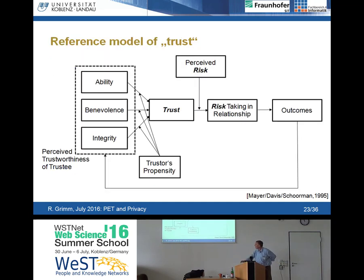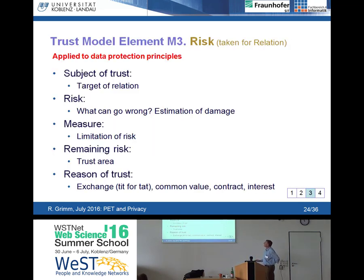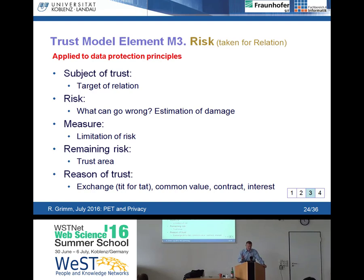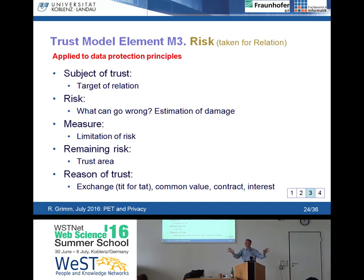M3 would be the risk; M1 the truster; M2 the trustee. This is part of requirements engineering — to analyze the risk. In order to analyze risk you must specify what is the subject of trust, specify the specific risk — what can go wrong — and estimate the damage. Risk has two dimensions: the damage and how much it can happen — the frequency. You must estimate that to understand whether the risk is too big and you must do something against it, or trust somebody, or the risk is not really big and you can take it on your shoulders.